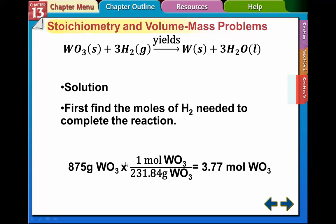To do that, we had to change these grams of tungsten oxide into moles, so we set up our little conversion here. One mole of tungsten oxide weighs 231.84 grams, so we do this division. 875 divided by 231 gives us 3.77 moles of tungsten oxide.